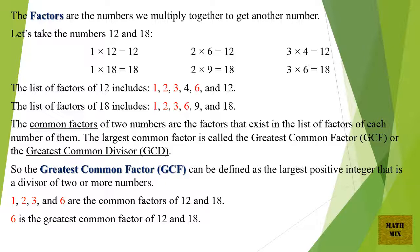The common factors of two numbers are the factors that exist in the list of factors of each of them. The largest common factor is called the greatest common factor, GCF, or the greatest common divisor, GCD.